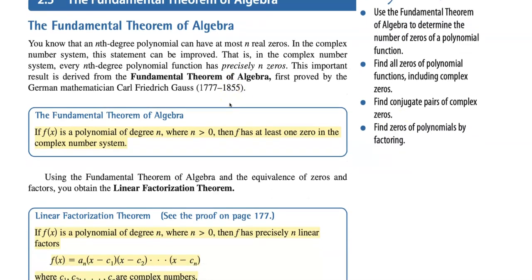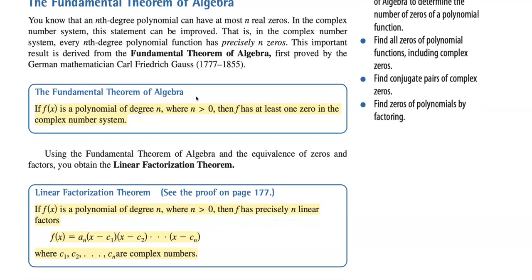The fundamental theorem of algebra came from Carl Friedrich Gauss, one of the famous mathematicians, and it's actually a very simple form to understand. All it says is this: if you have a function like x to the fifth plus more terms, then whatever that power is, that's the number of complex roots you have — complex zeros, solutions. That's the fundamental theorem of algebra.